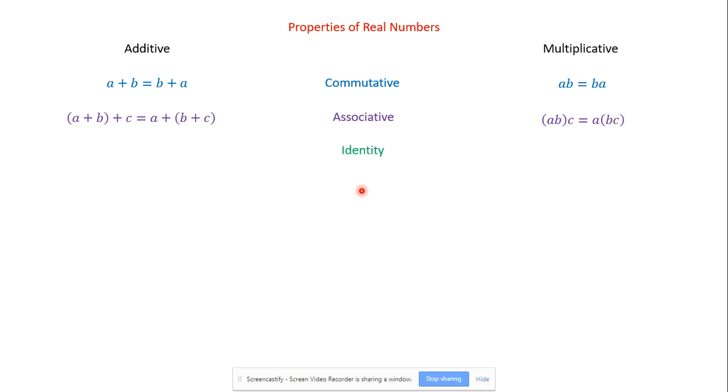The next one is the identity property. We have an additive identity and a multiplicative identity. An identity is something where we can either add or multiply to a number to keep the same thing. So what can you add to any number to keep it the same? Zero. Anything plus zero equals itself.